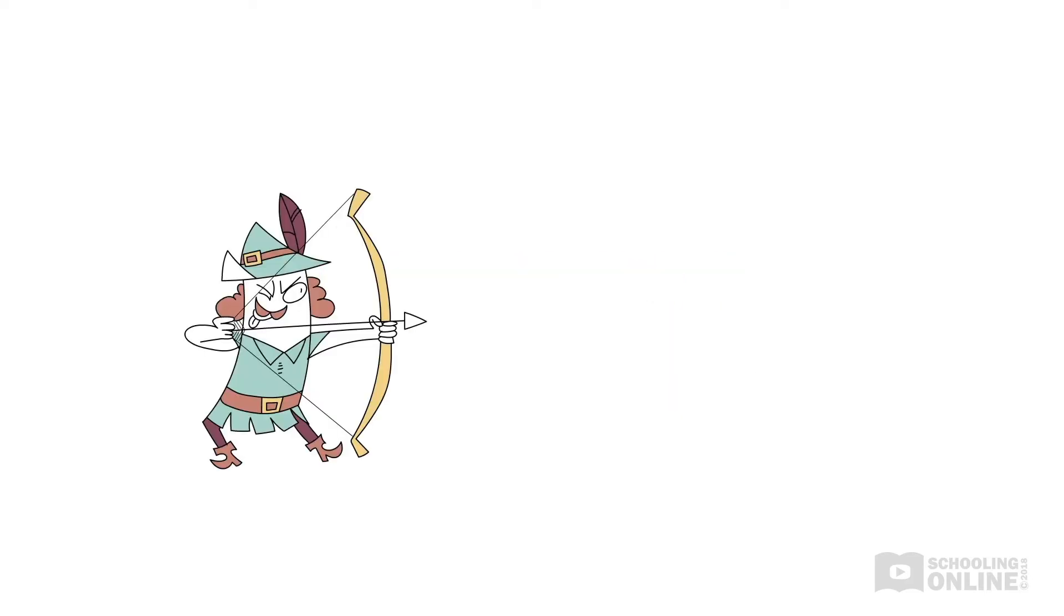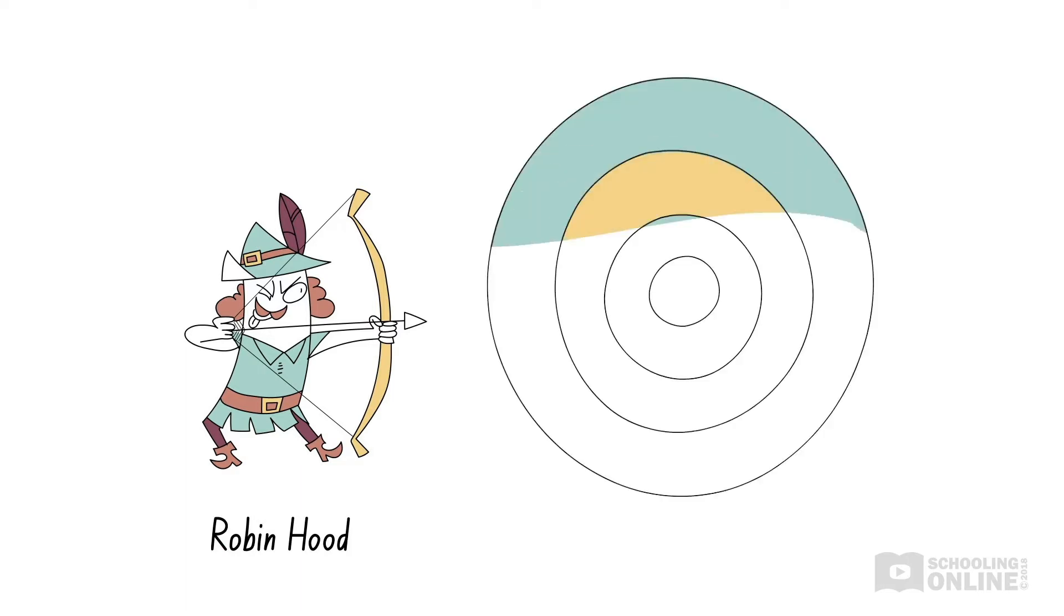For example, let's consider Robin Hood. Even though Robin Hood consistently hits the bullseye, his arrow hits a slightly different spot each time. Each shot differs in direction and distance from the centre of the target. We cannot predict exactly where his next arrow will hit because these differences are random.